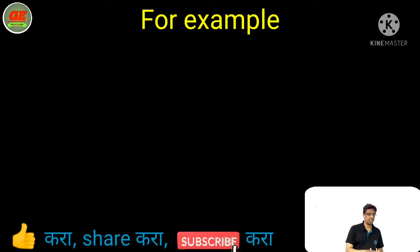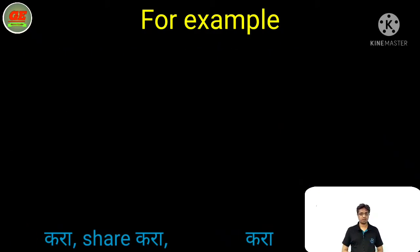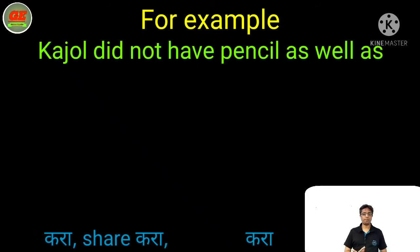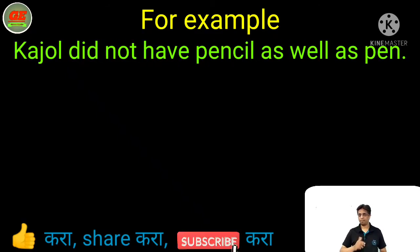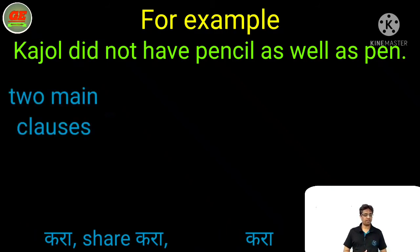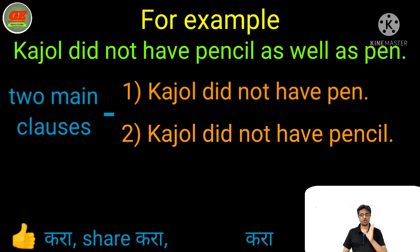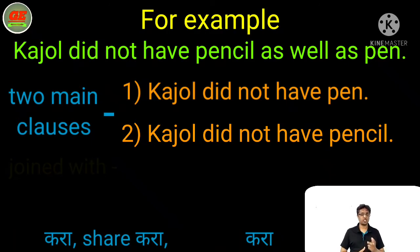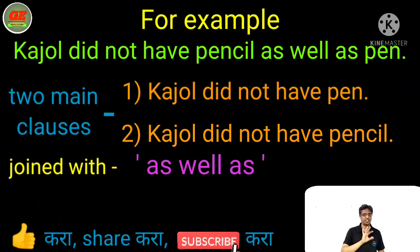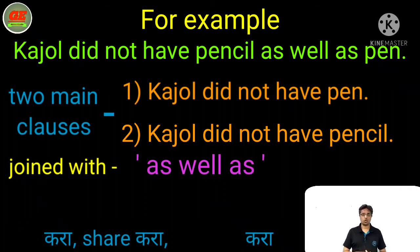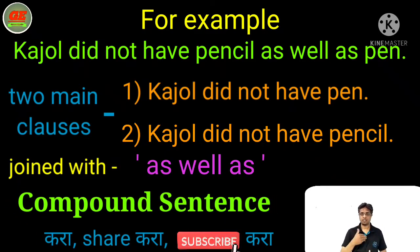Take another sentence: 'Kajal did not have pencil as well as pen.' Into that sentence, two main clauses are available. First: 'Kajal did not have pen,' and second: 'Kajal did not have pencil.' These two main clauses are joined with the coordinate conjunction 'as well as.' That's why this sentence is also known as a compound sentence.